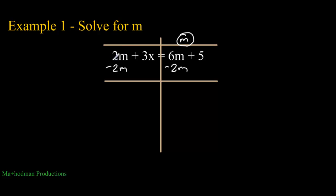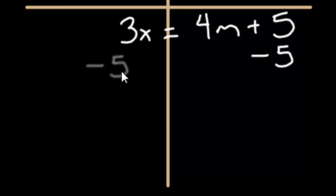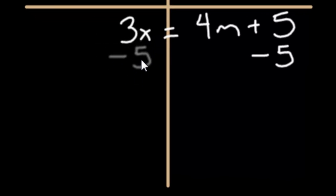Now calculate 2m minus 2m. Those cancel out. 3x drops straight down equals 6m minus 2m, that's just 4m. And this 5 we didn't touch, that just drops straight down. The second step will be to get rid of this 5 by subtracting a 5. Here's the catch. I have to do it on both sides, but I cannot subtract it from this 3x and put that right under it because these are not like terms. When that happens, just put it aside just like that.